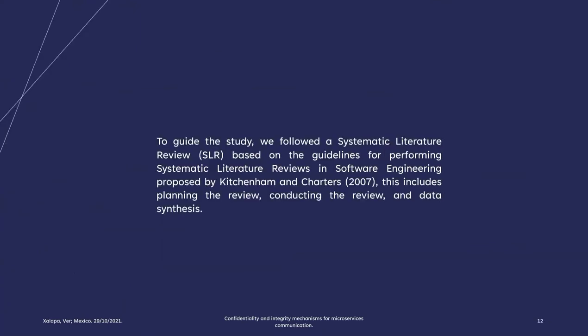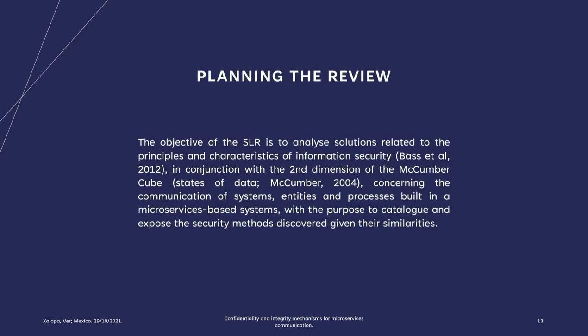Section 3. To guide the study, we follow a systematic literature review based on the guidance for performing systematic reviews in software engineering proposed by Kitchenham and Charters. This includes planning the review, conducting the review, and data synthesis. As part of planning the review, the reason for performing the systematic literature review is to analyze solutions related to the principles and characteristics of information security, in conjunction with the second dimension of the MacCumber model, concerning the communication of systems, entities, and processes within microservice systems, with the proposal to catalog and expose the security methods discovered given their similarities.